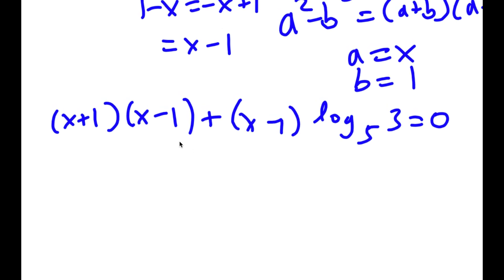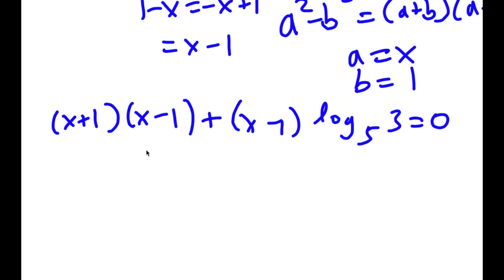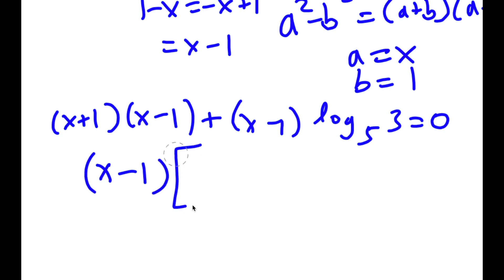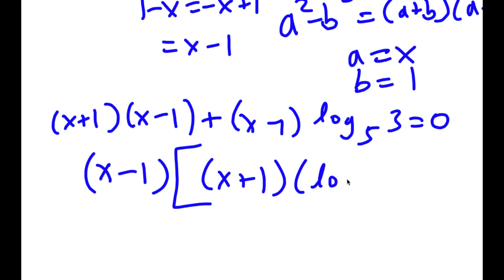So now if I factor x minus 1, I get x minus 1 times x plus 1 plus log base 5 of 3, and this is equal to 0.